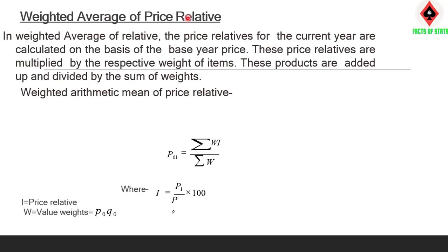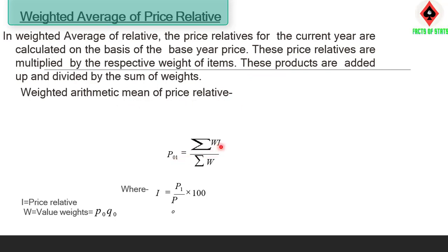Weighted average of price relatives: The price relatives for the current year are calculated on the basis of the base year. The price relatives are multiplied by the respective weights of items. Formula for weighted arithmetic mean of price relatives: P01 = (Sigma W·I) / (Sigma W), where I is the price relative and W is the weight, that is P0·Q0.